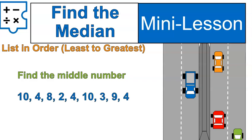Let's do it. This is the list I have when I listed them in order. 2, 3, 4, 4, 4, 8, 9, 10, 10. I just took the same list and listed them in order from least to greatest.